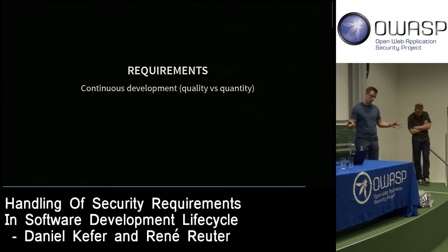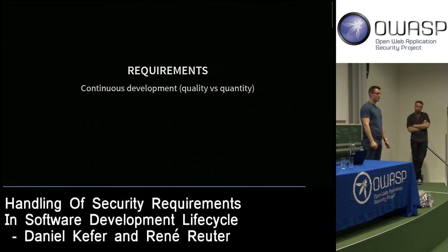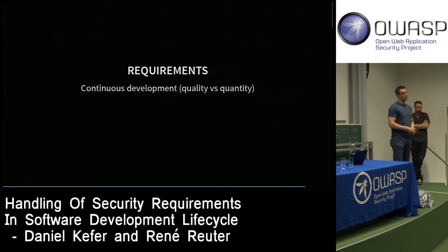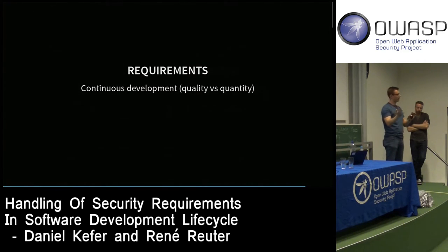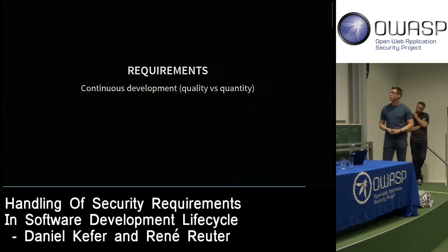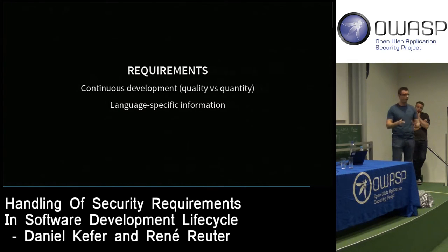A challenge: in the beginning you want to be as secure as possible, so you end up with many requirements. Our company's first version had 200 requirements — showing that to a development team in a workshop won't make you many friends. We've been trimming unused requirements, adding others, and reconsidering groupings. Currently our requirements are quite generic — we lack language-specific code patterns, examples, and technology-specific guidance.